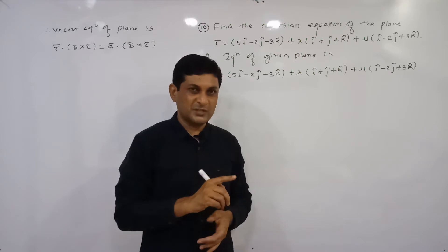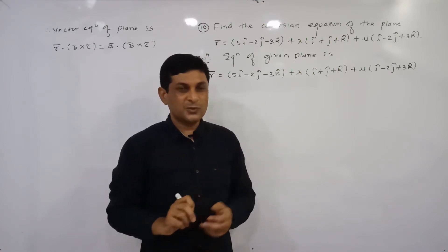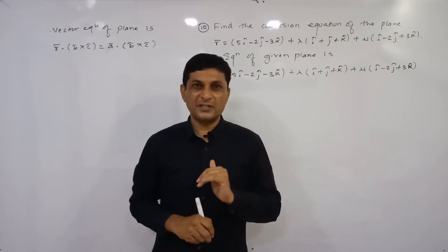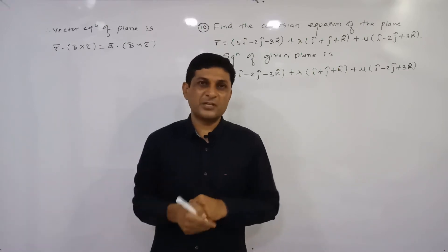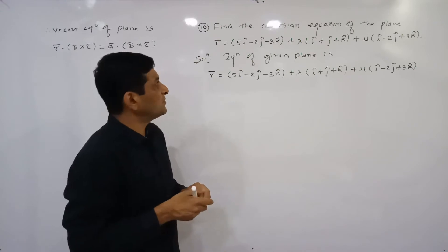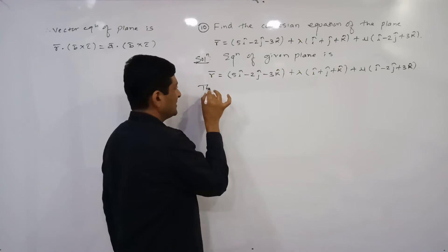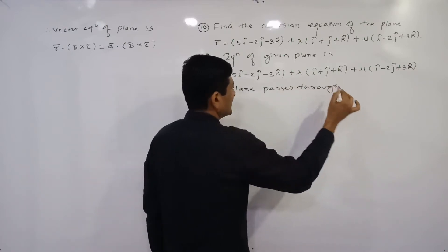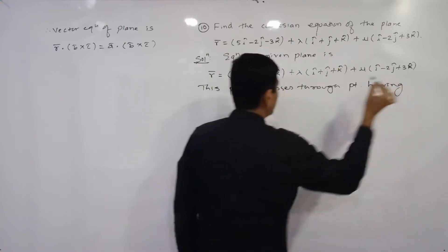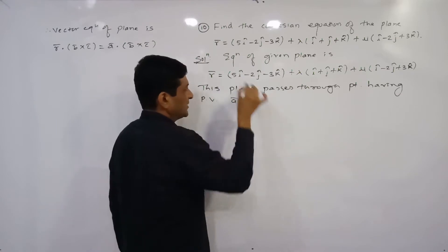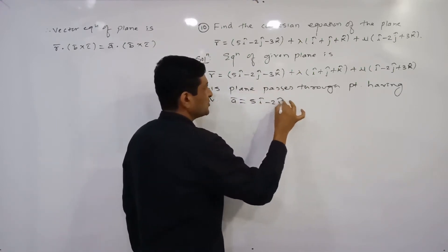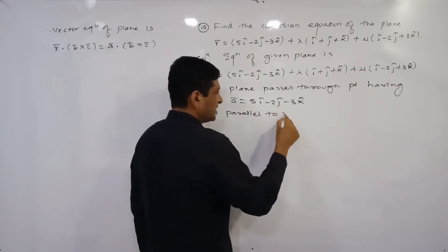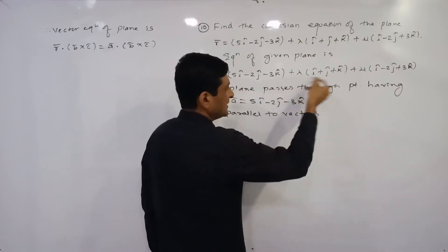There is no direct formula in the textbook to find the Cartesian equation from parametric form. A note formula has been given for objective-type questions, but since it is not in the textbook, we first find the vector equation and then convert it to Cartesian form. From the given equation, we can say that this plane passes through the point having position vector ā = 5î - 2ĵ - 3k̂.